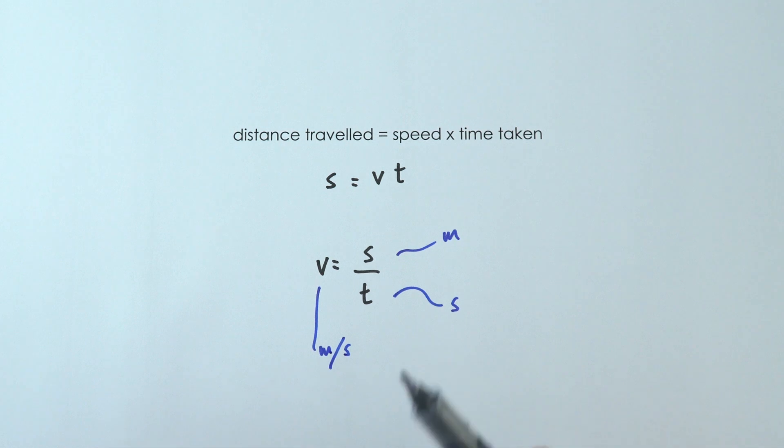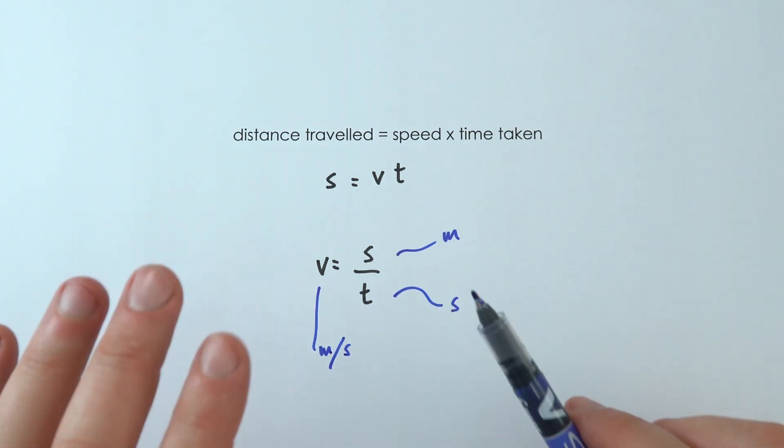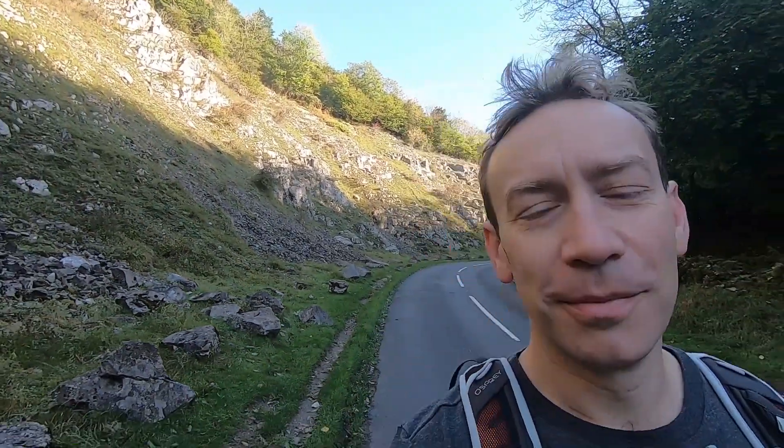This equation — speed equals distance divided by time — is incredibly useful for all of GCSE and even A-level physics. It's also useful to remember a couple of typical speeds: the speed of sound is about 330 meters per second. Walking, I'd cover about one and a half meters per second; jogging would be about three meters per second; and on a bike I'd be traveling at about six meters per second — so every second I travel another six meters.